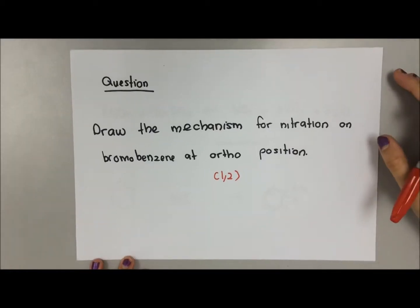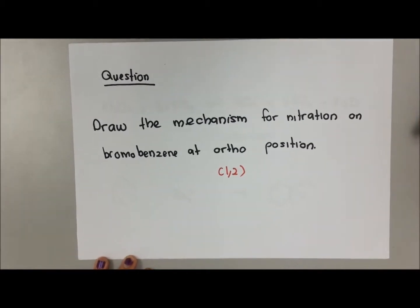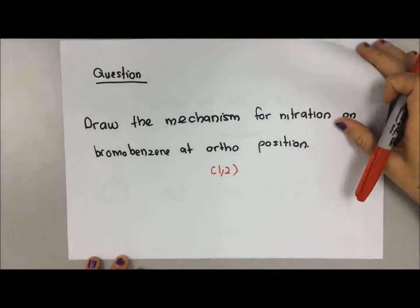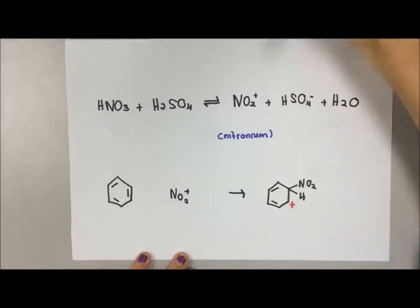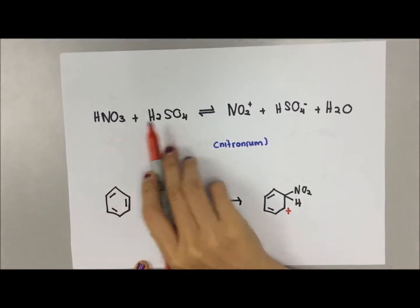Today we will draw the mechanism for nitration on bromobenzene at ortho position, which is the first and second carbon. First of all, nitric acid and sulfuric acid - nitric acid is the reagent, sulfuric acid is the catalyst.